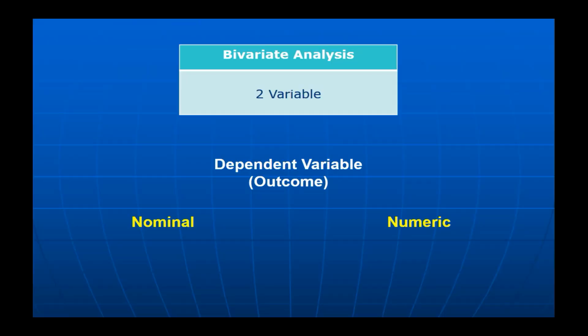The dependent variable should be identified before starting the analysis and even before creating the SPSS data sheet. The dependent variable has three possibilities: it could be nominal, ordinal, or numeric. For clinical practice, we focus mainly on nominal and numeric. Nominal means anything with a yes-or-no outcome, like occurrence of lung cancer. Numeric means a measurement, like arterial blood pressure.